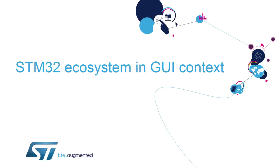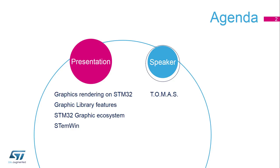Hello and welcome to this presentation on the STM32 ecosystem in the graphical user interface context. First, we will review the processes involved in graphics rendering and how the STM32 family is prepared to handle them on a hardware point of view. Then we will consider the software part through the graphic library. The third part will present the full set of tools proposed by ST to develop graphical user interfaces, and finally we will introduce one of the graphical library solutions called STMwin.